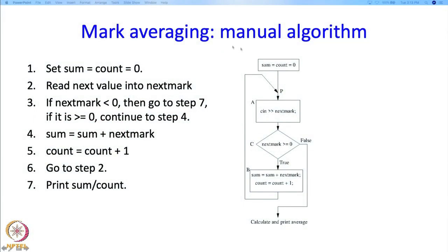Now let us draw a flow chart to make sure we understand exactly the control flow — what happens after what. We start by setting sum and count to 0, then read in next_mark. We check whether next_mark is greater than 0. If false, we calculate and print the average; otherwise we add next_mark to sum, add 1 to count, and repeat from the read statement.